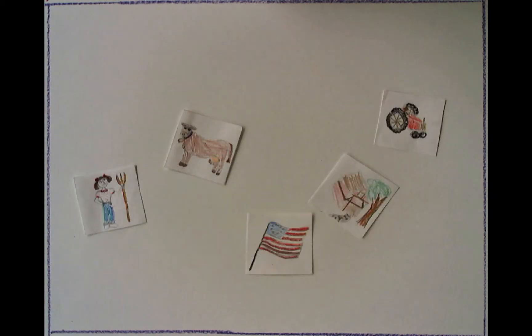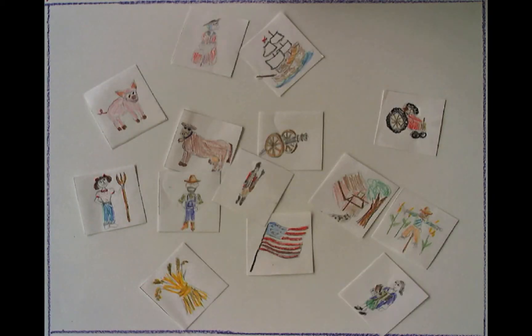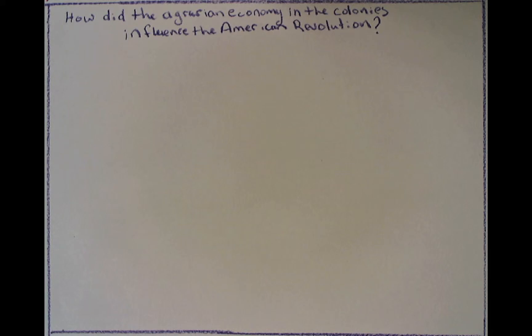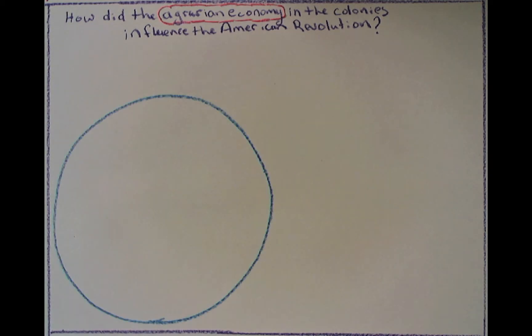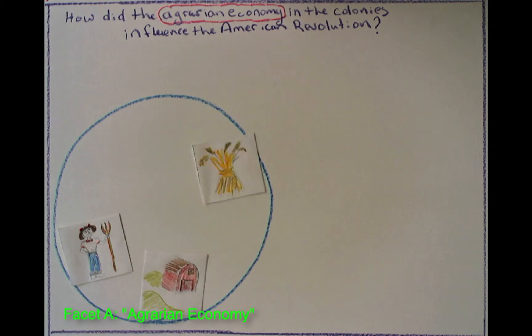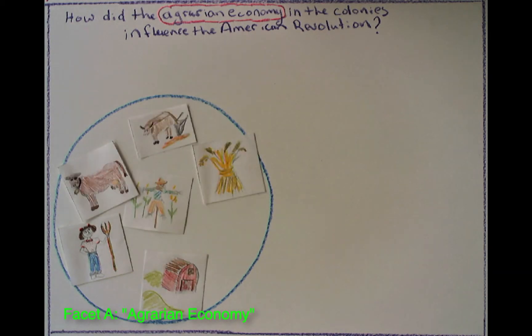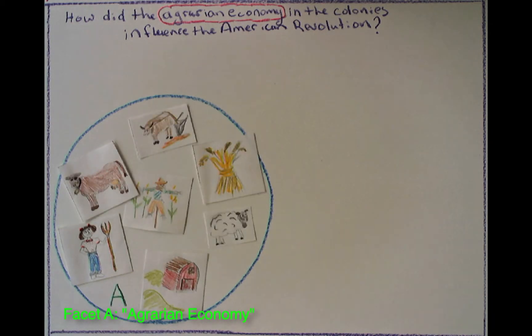First, let's put a border around all this white space and pretend it's our American history database — it has lots of information on all sorts of topics. To break the query down into facets, analyze it, identifying its big ideas or major concepts. The big idea of agrarian economy should pop right up at you. We'll draw a circle around this portion of the database and label it Facet A, Agrarian Economy, and populate the circle with lots of sources representing the agrarian economy concept.